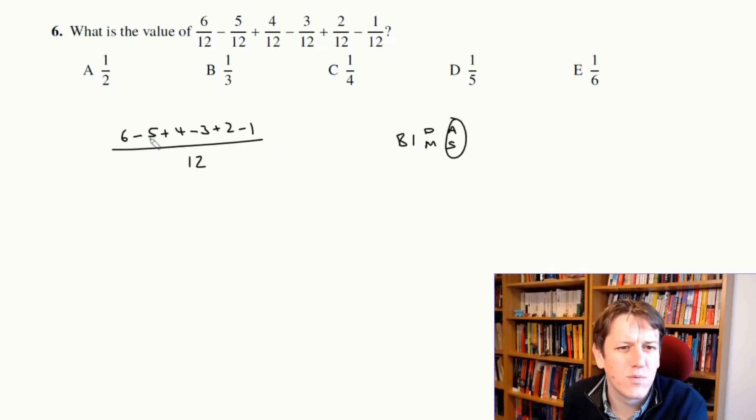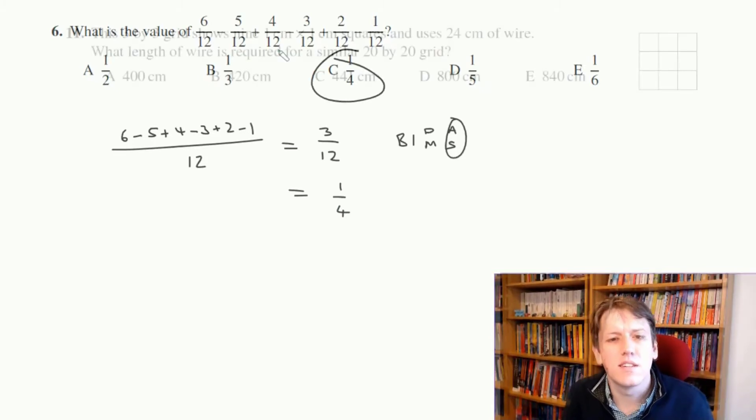minus 3 is 2, plus 2 is 4, minus 1 is 3, and so I get 3 over 12, and that gives me one quarter once I've simplified it, and so the answer is C.